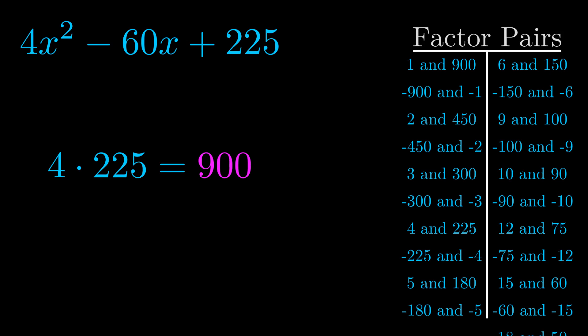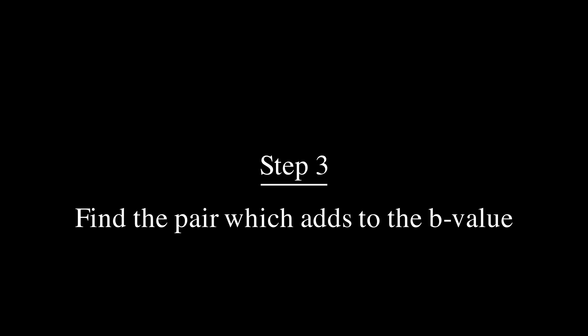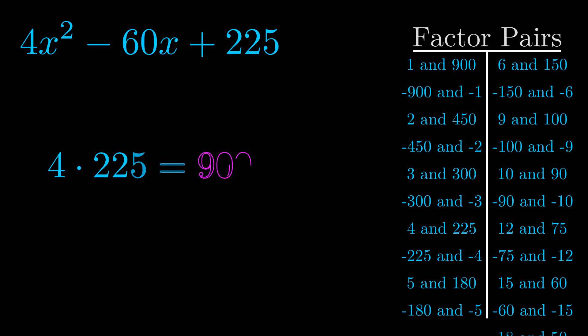Now once you have these factor pairs, the goal is to find which of these pairs adds to the b value. The b value is the coefficient on the x term. That's the middle term, the one that we haven't done anything with yet. And really this is the only factor pair that we need.